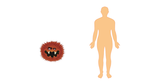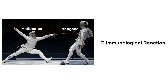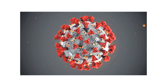When a foreign particle such as a bacteria or virus enters our body, the immune system — or as I like to call it, the Ministry of Defense of our body — starts producing certain chemical substances to help fight and destroy those foreign particles. These foreign particles are generally known as antigens, while the substances produced by the body to fight and destroy these antigens are generally known as antibodies. The interaction between antigens and antibodies is generally termed an immunological reaction or immune response.